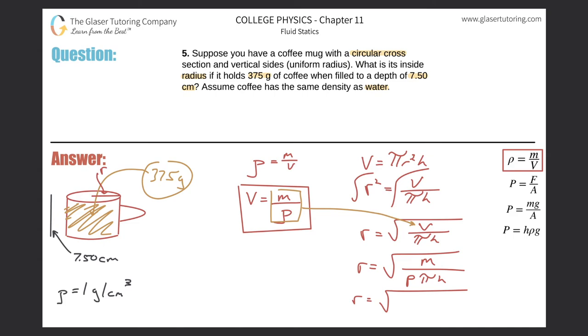Now if we plug everything in, the mass was 375. The density was 1 times pi times the height of 7.50. And now when we plug that all into the calculator, what do we get?